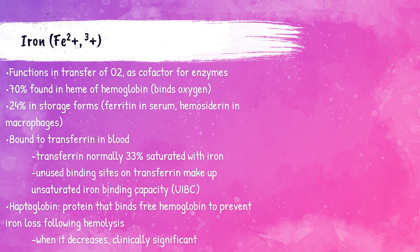Iron is the most abundant trace mineral found in the human body. It is present in virtually every cell in the body and functions for the transport of oxygen molecules. Around 70% of iron is found within the heme molecule of hemoglobin in the red blood cell. The rest of the iron in the body is found in storage forms. When stored in the serum, iron is bound to transferrin and is called ferritin. When it's stored in macrophages, it's called hemosiderin. Anytime you see hemosiderin or ferritin, you want to associate that with iron.